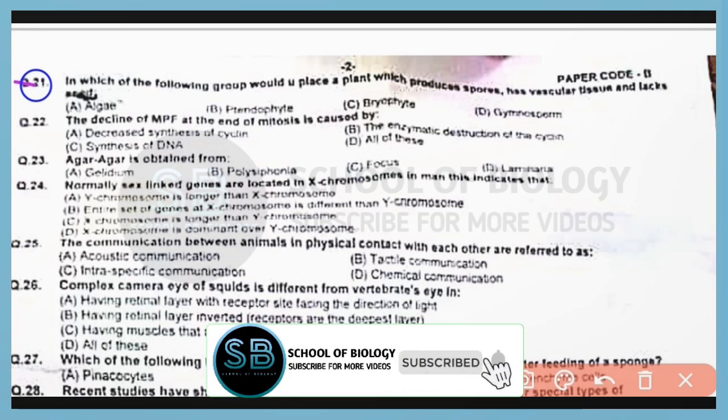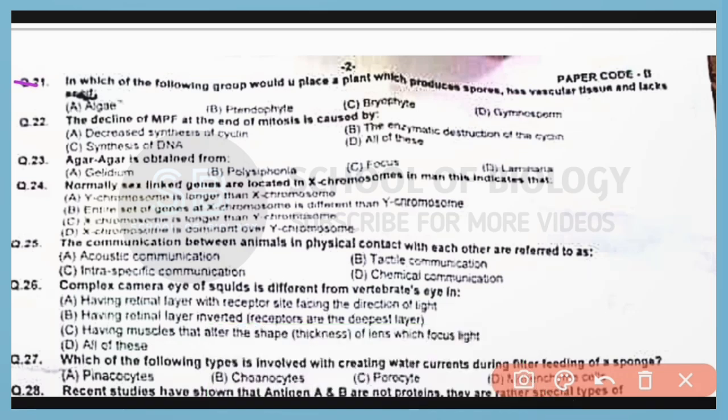Question number 21. In which of the following groups would you place a plant which produces spores, has vascular tissue, but lacks seeds? Correct answer is option B. Pteridophytes have vascular tissue, produce spores, but have no seeds.